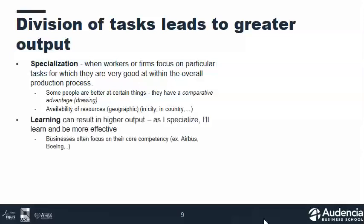The second reason we divide tasks is that specialization allows us to learn. If I'm doing something over and over, I become more efficient and effective at it. Businesses focus on their core competencies — Airbus and Boeing have specializations they get better and better at over time, and as you learn, your costs of production decrease. Boeing, for example, produces the airframe and wing very specifically and has become very good at it, outsourcing other components.